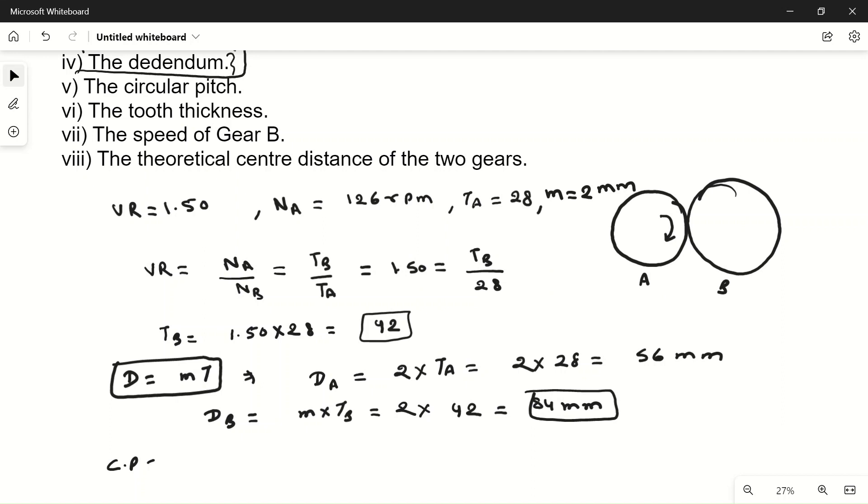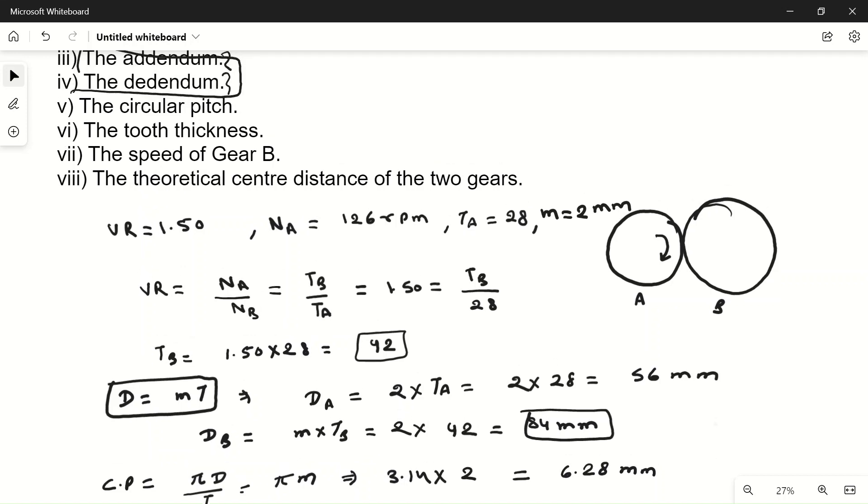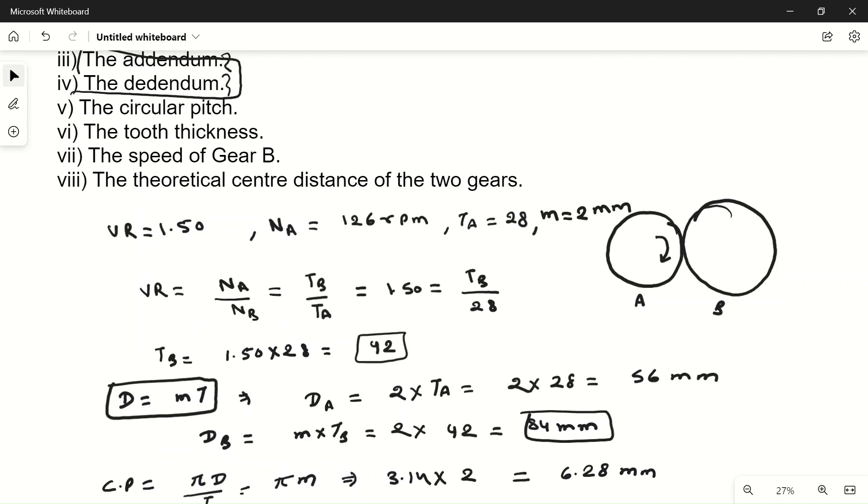Now we have to find the circular pitch. Circular pitch is equal to pi into D by T, which is equal to pi into m. Pi is 3.14 into module 2, so this is equal to 6.28 mm. The tooth thickness is also given for standard gears. If you see number of teeth and module from the chart, you can find the values from the table.